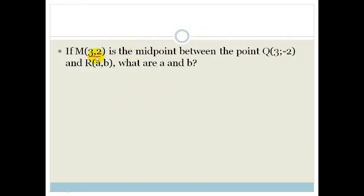It says M(3,2) is the midpoint between the point Q(3,-2) and R(a,b). And they want to know what are a and b. So let's first of all write down our formula. We know that M, the midpoint,